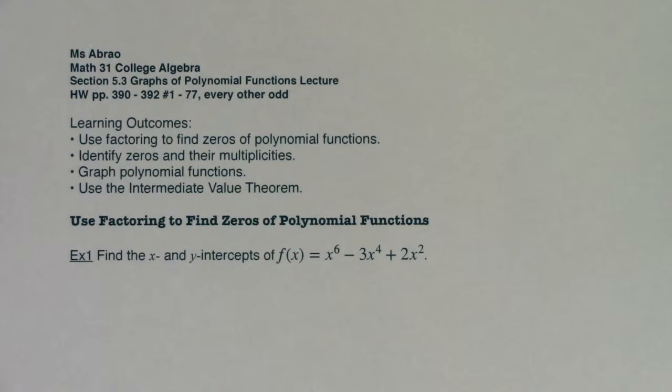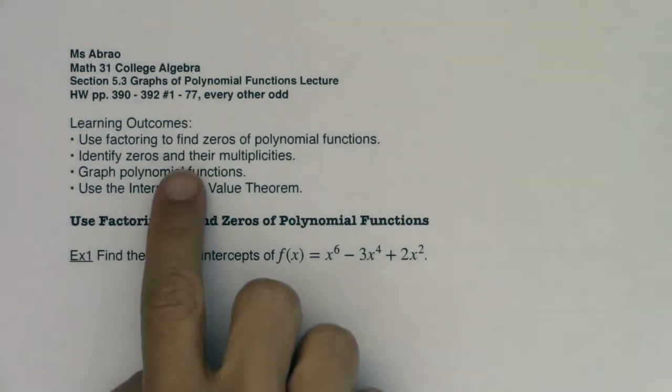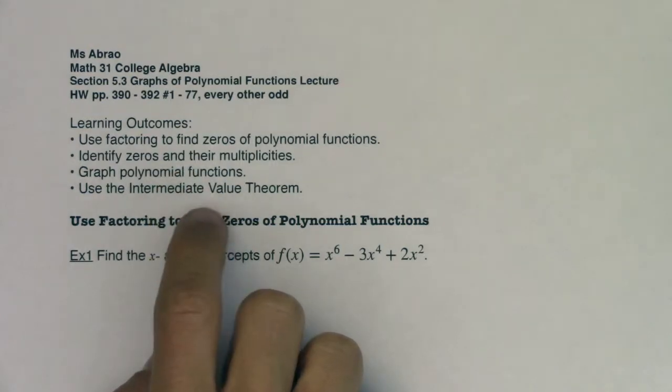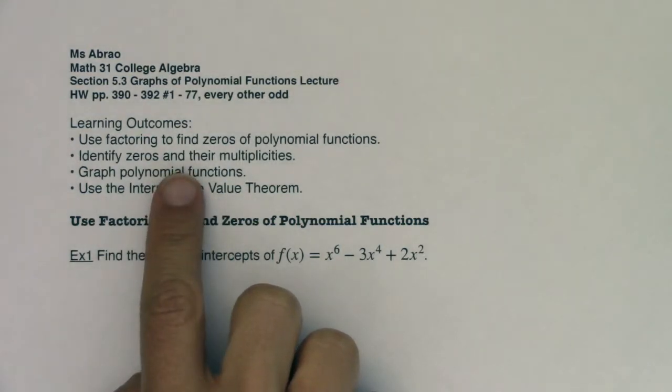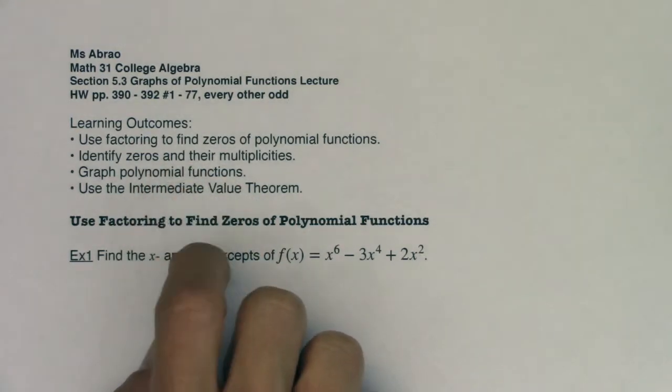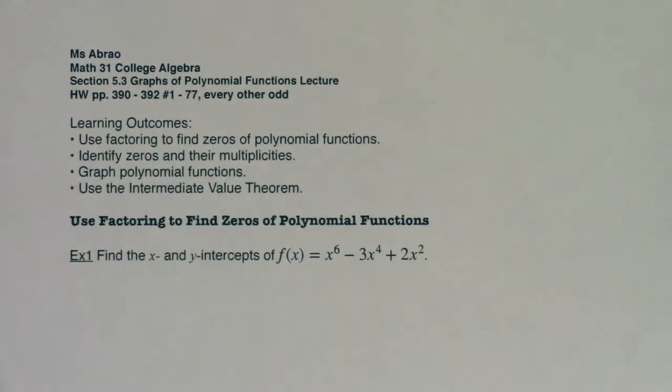Hey Math 31, welcome to section 5.3. We're going to be focusing on the graphs of polynomial functions in this section. We're going to use factoring to find some zeros of these polynomials. I'm going to talk about multiplicities of zeros, we're going to graph these polynomial functions, and then we're going to use the intermediate value theorem.